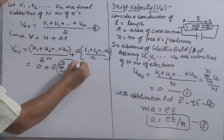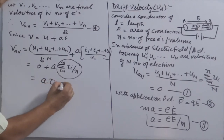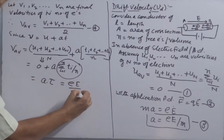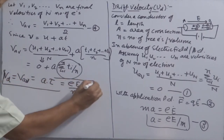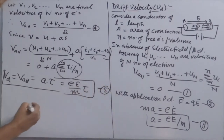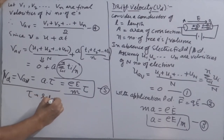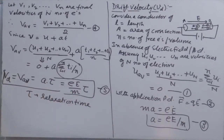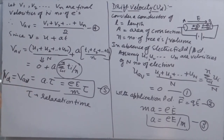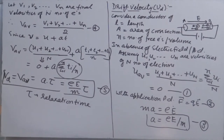The factor (Σ Ti)/N is termed as relaxation time τ. Substituting the value of acceleration, V_avg = eEτ/m. This average velocity is actually termed as drift velocity.